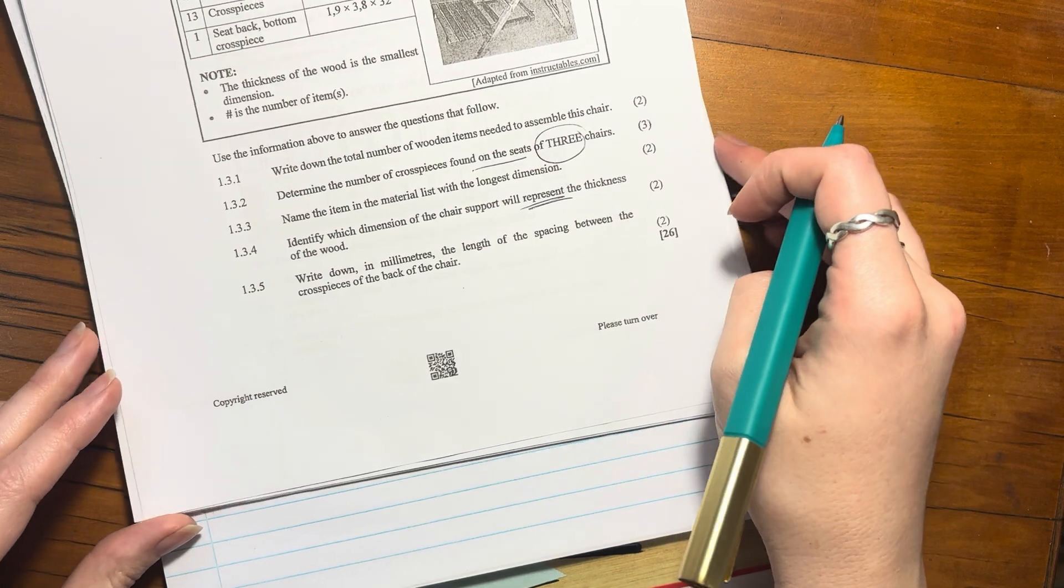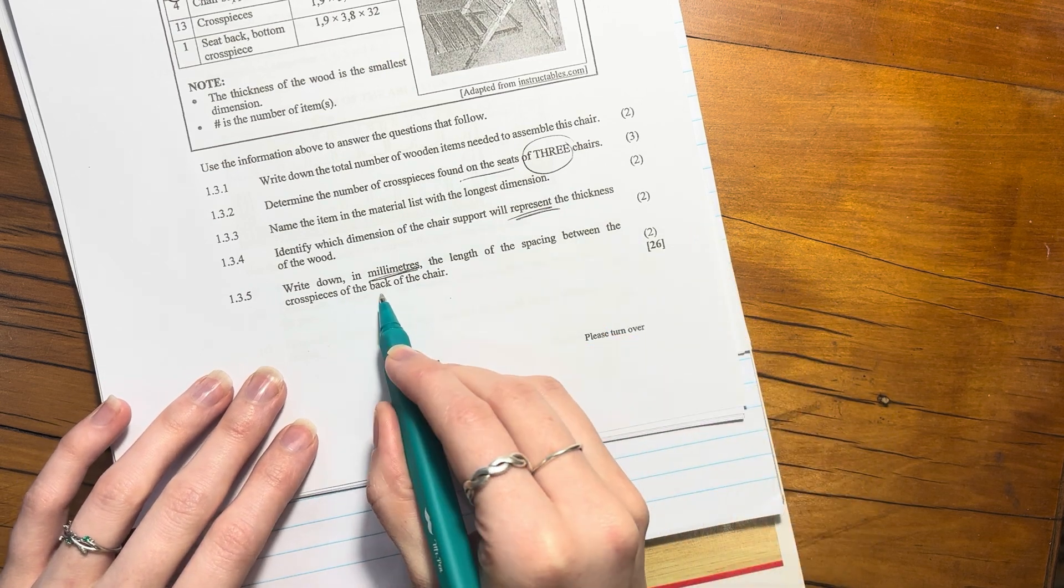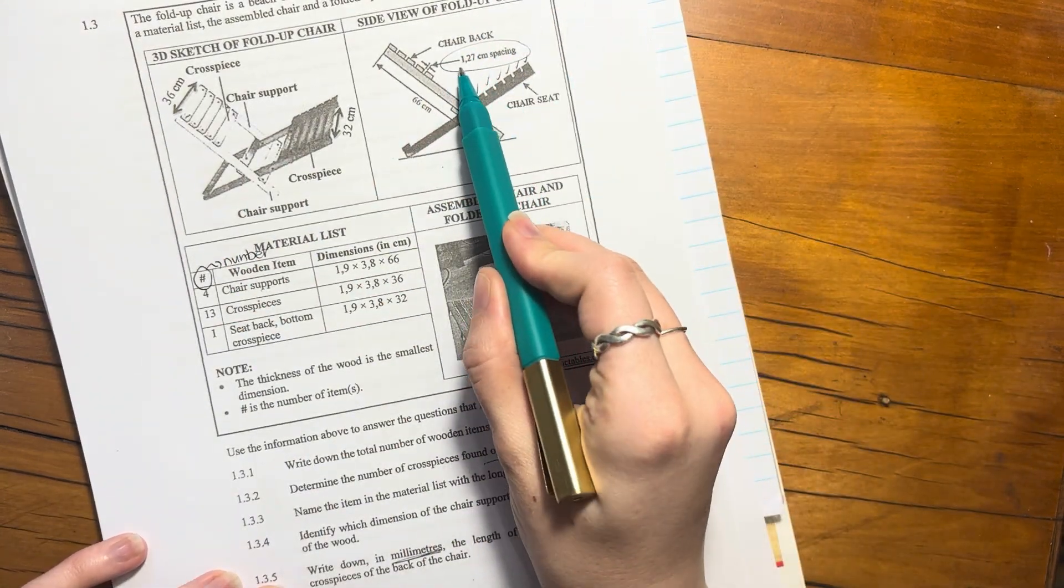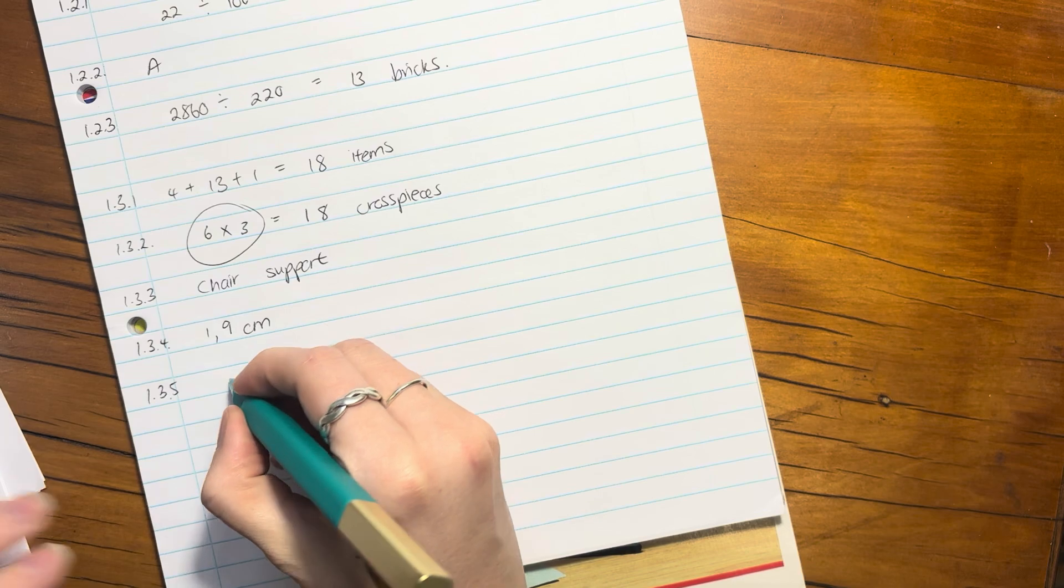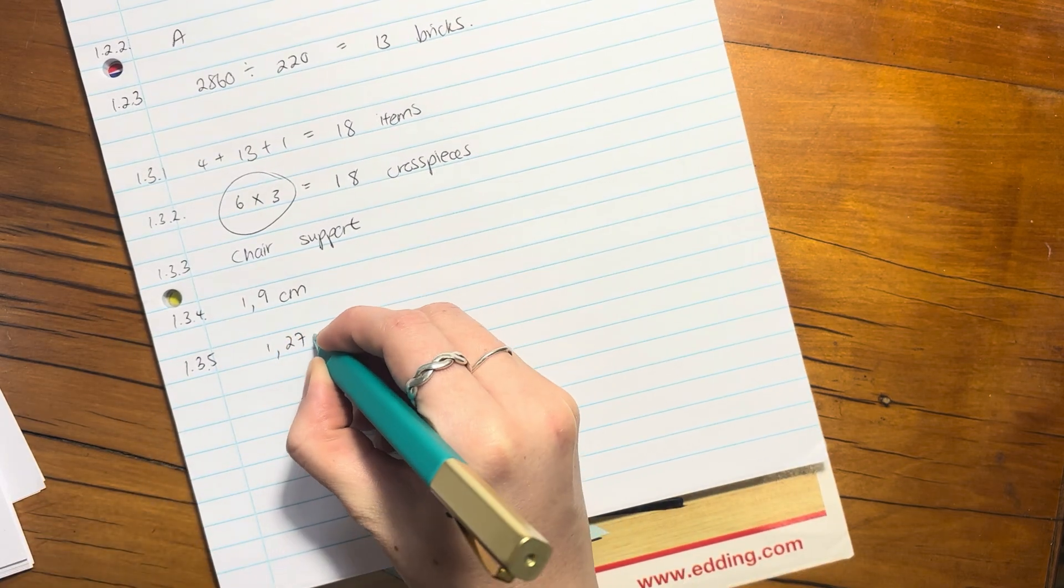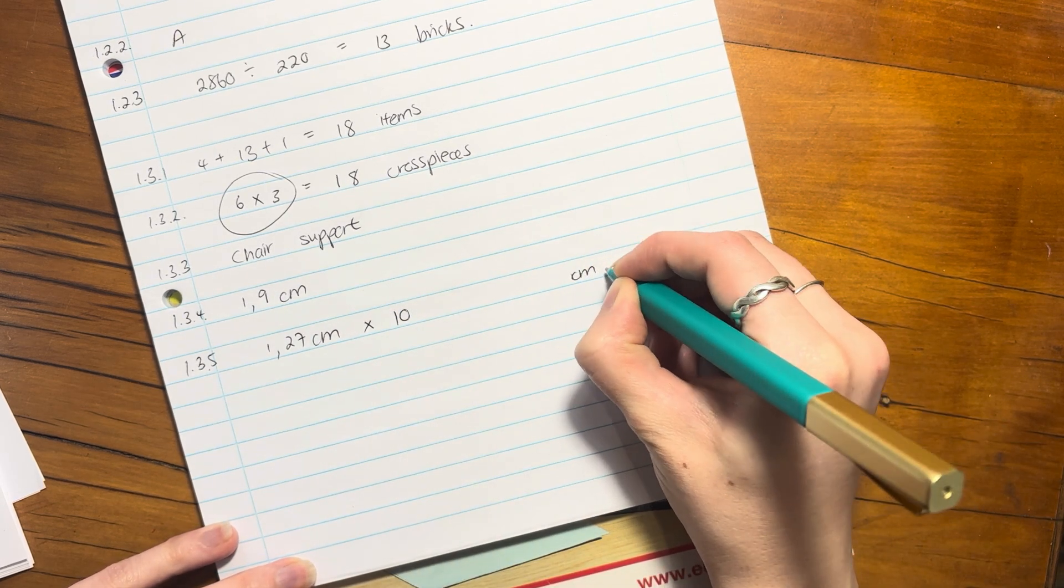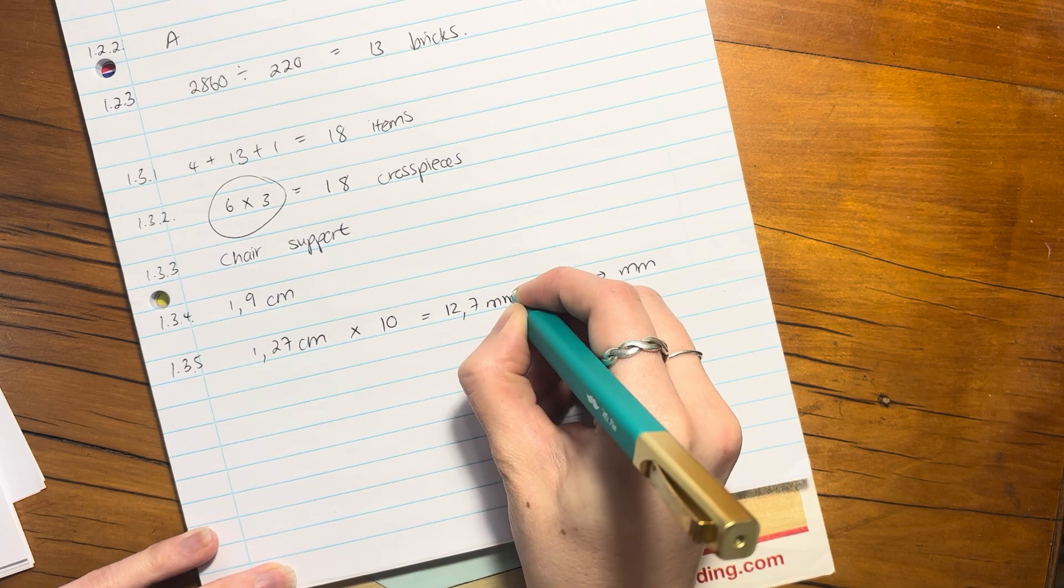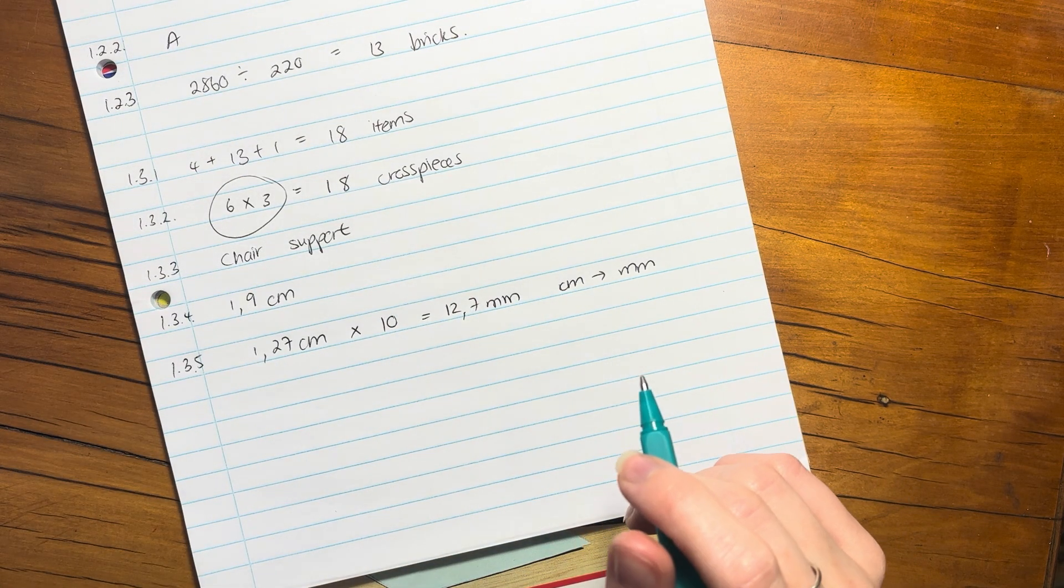Let's now move on to our last question here. We are flying. Write down in millimeters, important, the length of the spacing between the cross pieces of the back of the chair. Now we only see that in this one here. So do you see that it says 1.27 centimeters spacing between each of the cross pieces of the back of the chair? So we can start with 1.27 centimeters. But it asks for it in millimeters. So what we need to do is actually times it by 10, because that's how we go from centimeters to millimeters. And that's going to be 12.7 millimeters. So important here just to work carefully. Start with 1.27 times by 10. Write your answer. Remember your units and then you're done. Let's move on to question two.